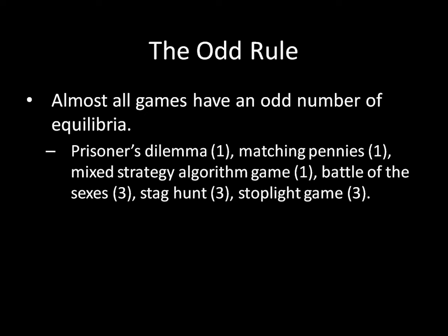We saw that Battle of the Sexes had three equilibria: two in pure strategies, one in mixed strategies. In the videos, we didn't actually cover the full equilibria for the Stag Hunt and the Stoplight game — all we saw is that they both had two pure strategy Nash equilibria. But if you go back to those videos, you'll see that if you run the mixed strategy algorithm on them, they both have a mixed strategy Nash equilibrium, which means they have three equilibria in total: two in pure strategies, one in mixed strategies.